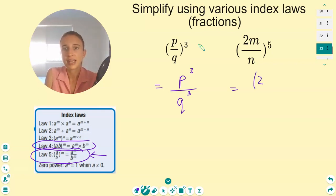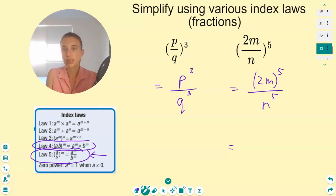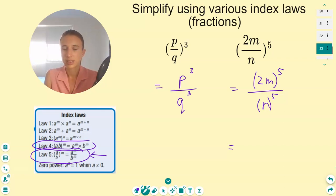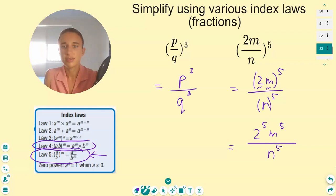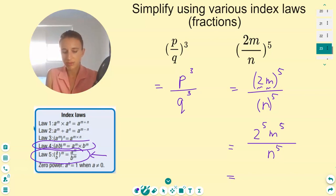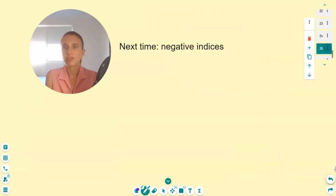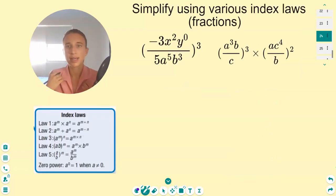Next: two m to the five on n, all raised to the five. That means the numerator is raised to the five and the denominator is raised to the five. Looking at the numerator, two m to the five — we raise each number to that power. Two is raised to the five, and m is raised to the five, over n to the five. We can't simplify the variables further because they don't have the same base. Two to the five is 32, so the answer is 32 m to the five over n to the five.